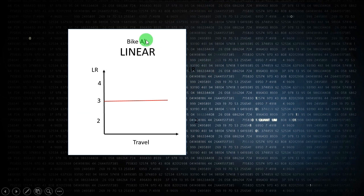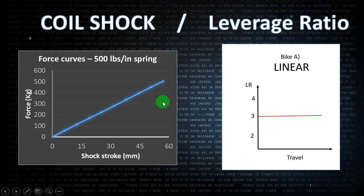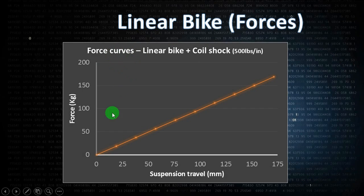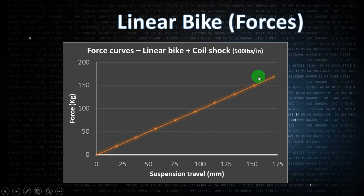For the first bike, which is a linear bike, the leverage ratio is constant at three. So you just divide the values of the coil shock graph by three and you get the suspension force curve of the bike. As you can see, the graph is a line, which means it is a linear bike. To bottom out this bike you will need around 170 kilograms of force at the rear wheel.